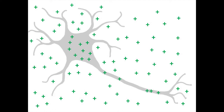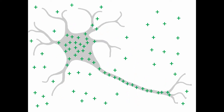When a neuron is active, there is a shift in this ion balance. In the initial stage of activation, a few positively charged ions cross the membrane and enter the neuron. More positively charged ions follow, and the end result is a lot more positively charged ions inside the neuron compared to outside.